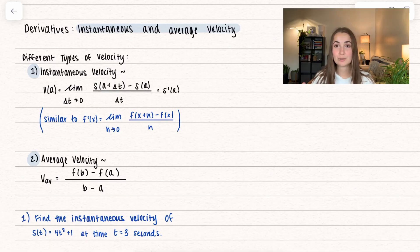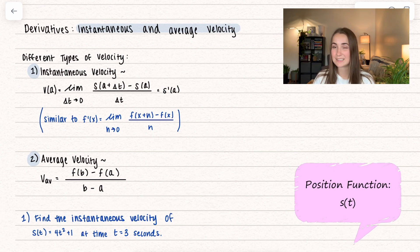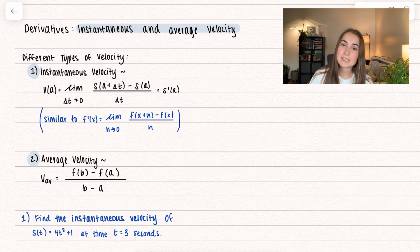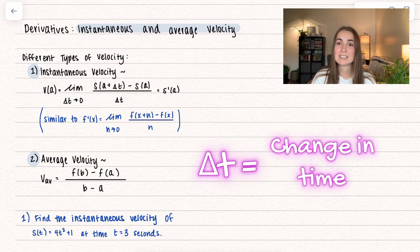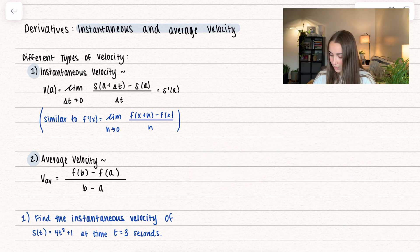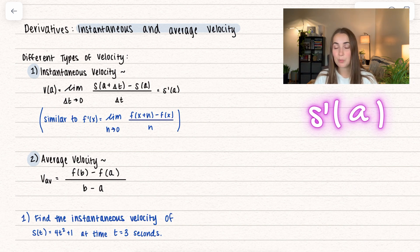First, we're going to go over how we can find these two different types of velocity. Looking at instantaneous velocity, the position function is usually denoted as s of t. We're given a value t equals a, and we want to find the instantaneous velocity at that value a. So we take the limit as delta t goes to zero — delta t just represents the change in time. We take s of a plus delta t minus s of a, all over delta t. Notice this is super similar to the limit definition of a derivative. What this is doing is finding the first derivative at the point a, which is the instantaneous velocity — it is the velocity at an instant.